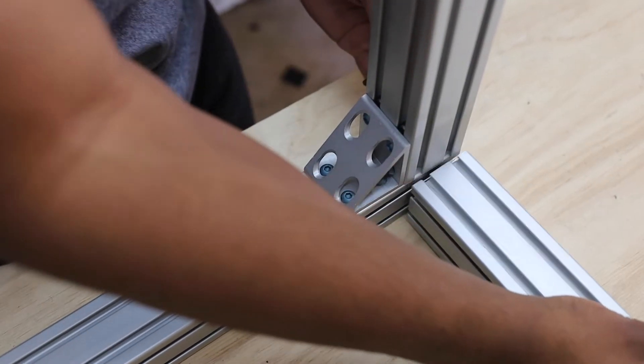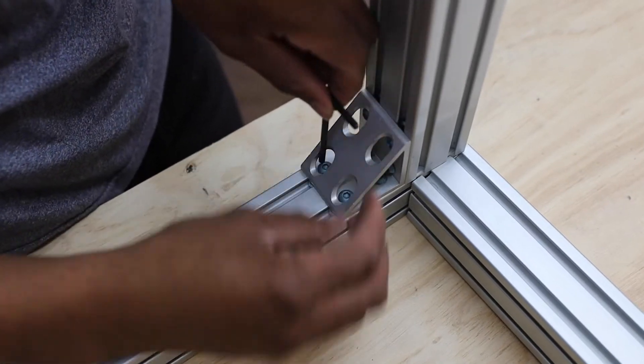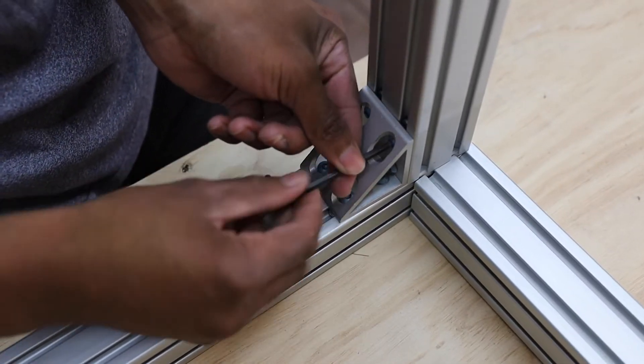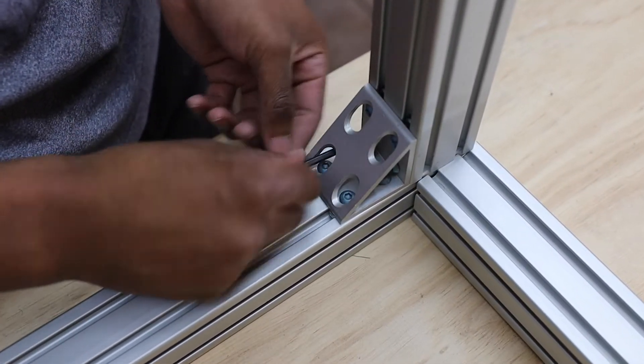I started off by working on the bottom section of my frame. It's made up of 50-50 aluminum extrusion and is held together by angle brackets, T-nuts, and bolts.